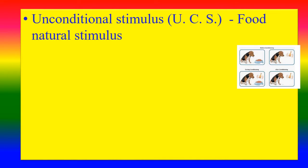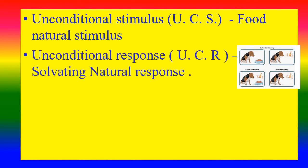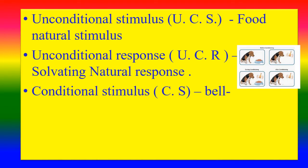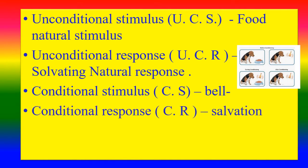Key terms in Pavlov's theory: Unconditional Stimulus (UCS) — the natural stimulus, such as food. Unconditional Response (UCR) — salivation, the natural response. Conditional Stimulus (CS) — a previously neutral stimulus. Conditional Response (CR) — the learned response acquired through conditioning.